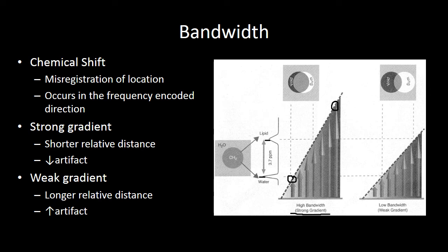The higher bandwidth comes with a stronger gradient. There is more separation between individual protons in space based on their Larmor frequency. So we have less misregistration due to the separation of fat and water protons. At a low bandwidth...